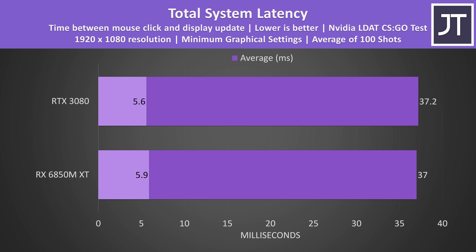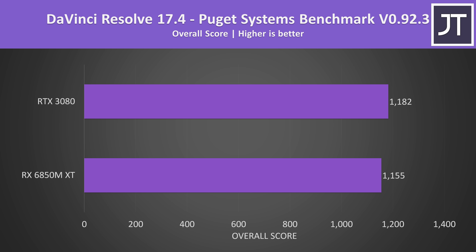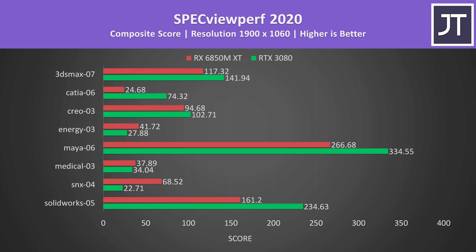I've also compared the total system latency — the time between a mouse click and when a gunshot fires on screen in CSGO. Regardless of whether we're going through the Nvidia or Radeon GPU, the times are about the same, well within the margin of error. It's not all just about gaming though: the 3080 was scoring 8% higher in Adobe Premiere, and Nvidia was still ahead in DaVinci Resolve, though much closer with the 3080 only about 2% higher. I've also tested SPECviewperf for professional 3D workloads — the 3080 was ahead in most cases, but the 6850M XT was ahead in 3 of the 8 tests.